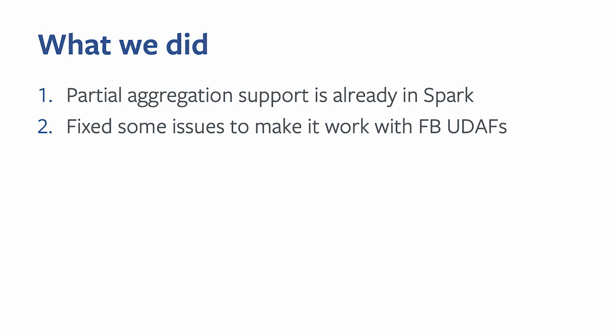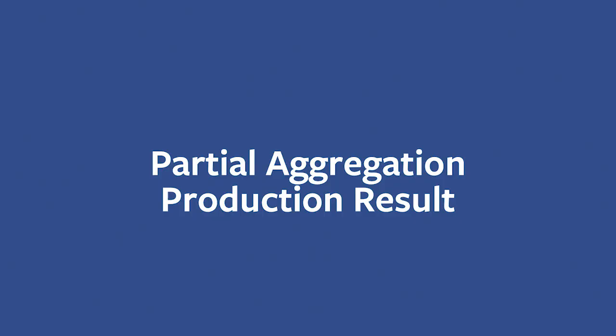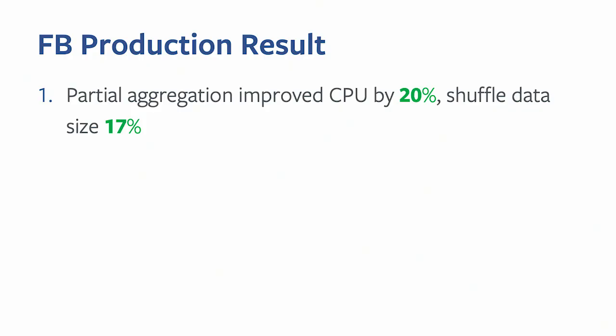At Facebook, partial aggregation support for UDFs already exists in open source, but we have so many different and complex UDFs that we had to fix issues to make it work. Once we rolled everything out to production, partial aggregation improved CPU by 20% and reduced shuffle data size by 17% for queries that benefit from it.